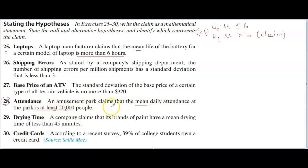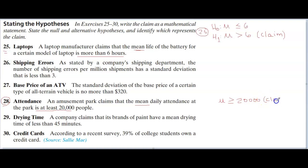We're working with population, so we use mu. The mean is at least 20,000 people. 'At least' means greater than or equal to, so: mu ≥ 20,000. Because that is my original claim, I put in parentheses the word 'claim' — just for myself, because later on I'm going to need that information to identify the original claim stated in the word problem.